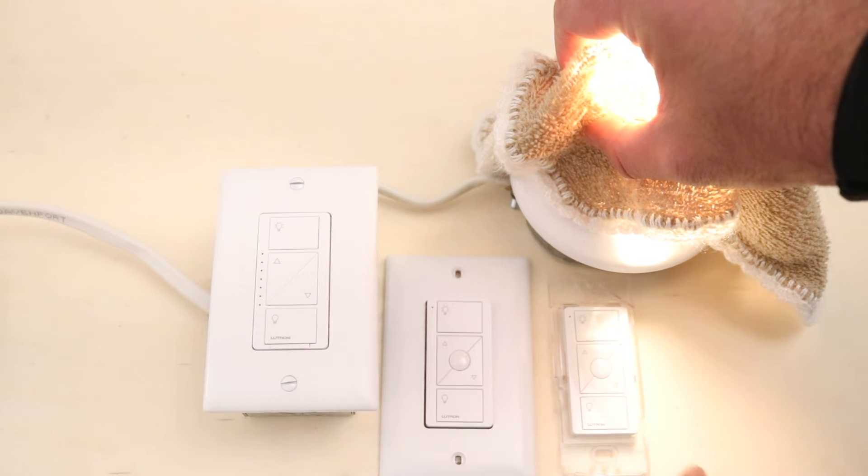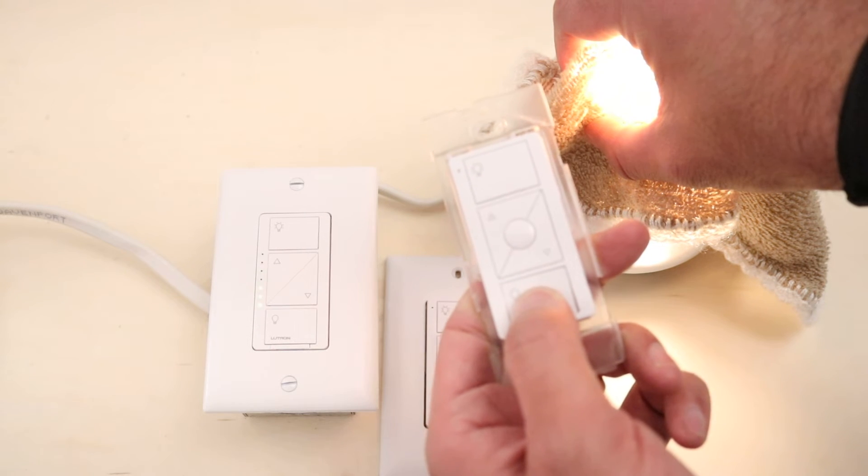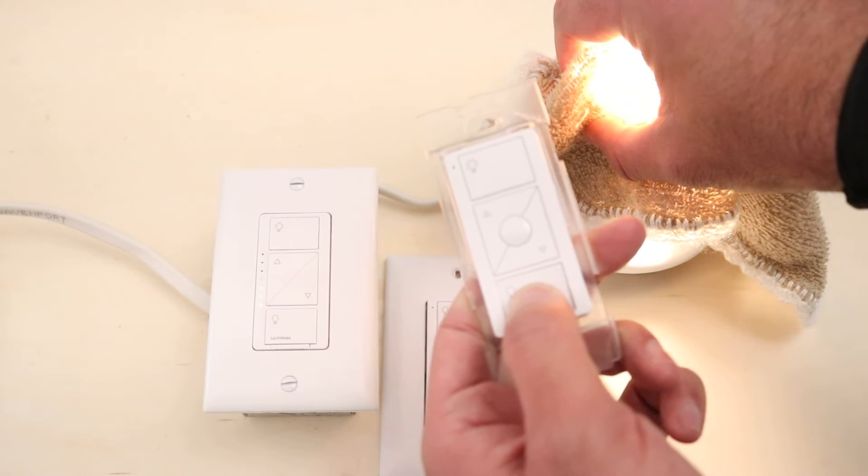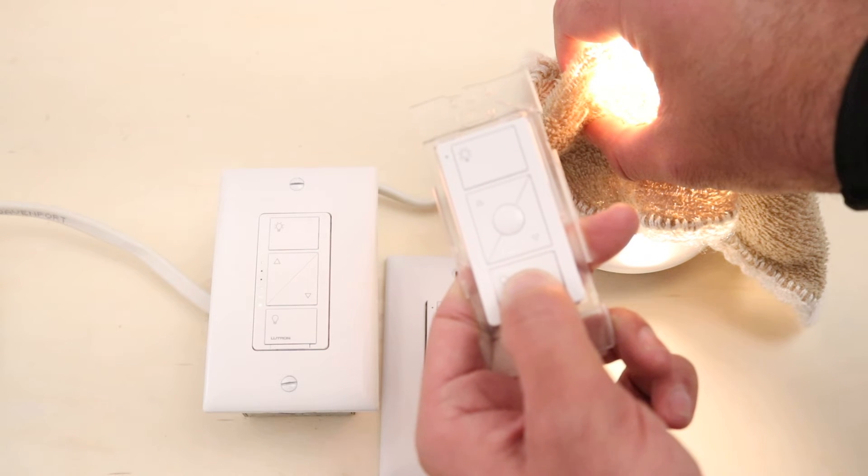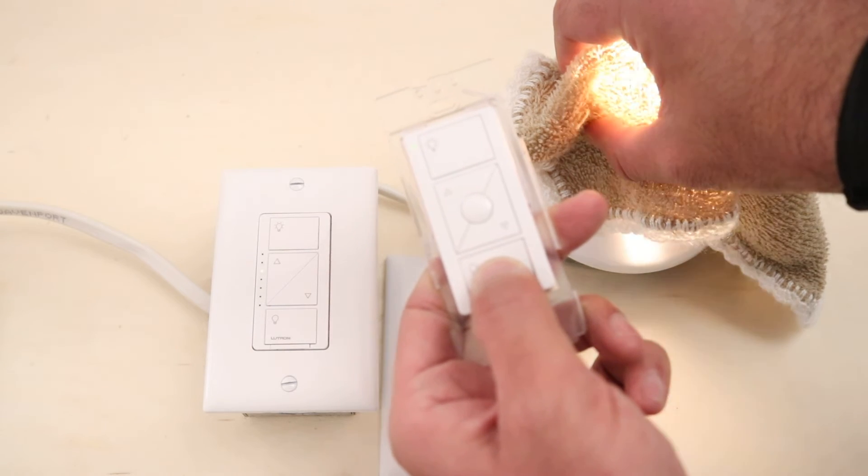All right, so now we have the light in pairing mode. We're going to take one of our remotes and we're just going to hold it down for six seconds now. And as soon as this light starts to flash on and off and the dimmer gives us an indication that it has connected, there we go, the connection has been made.